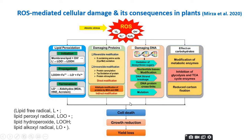All these consequences of ROS damage are involved in cell death and reducing growth and yield in plants. This is all for this video — thank you.